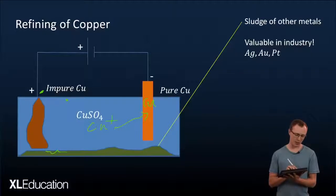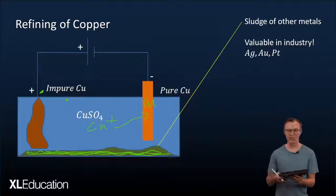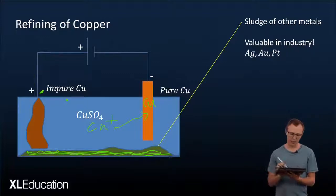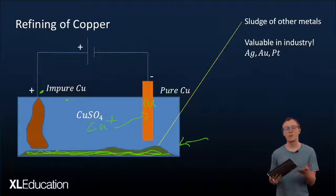So the reason the copper is being reduced and not the other metals that are going to form the sludge here and form part of the impurities is because the copper is simply better at being reduced. So this sludge that forms here at the bottom is made up from other metals that was part of the impure copper.